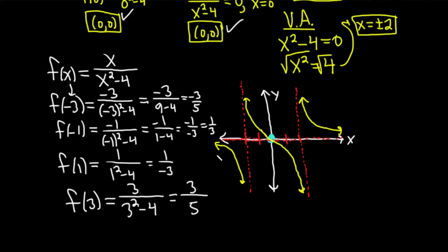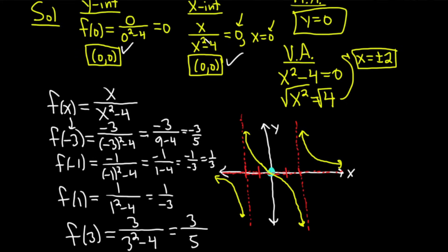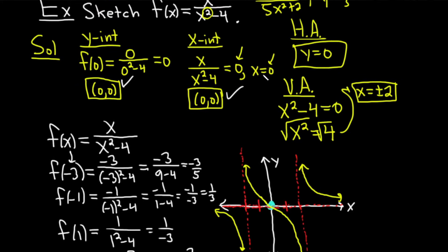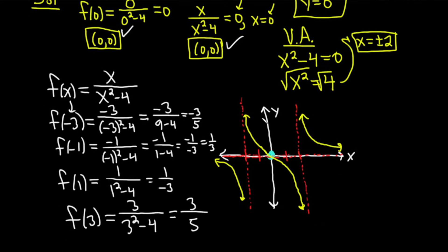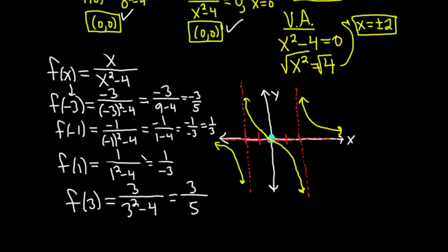Quick recap: you find all the intercepts and asymptotes, then do your graph and plot numbers to figure out where the graph actually is — down below or up top — and then you just connect the dots.